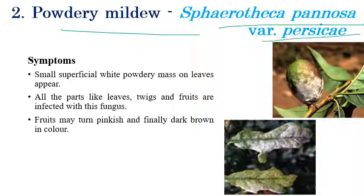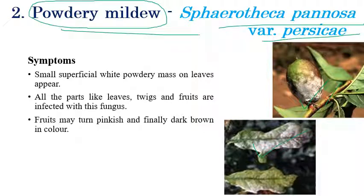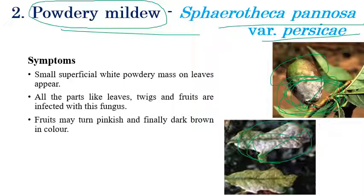The second disease is powdery mildew, caused by Sphaerotheca pannosa var. persica. The name itself indicates powdery growth, which can be seen on leaves, twigs, and fruits. The symptom is a white color superficial powdery growth on infected fruits and leaves. Infected fruits are also turned into a pinkish color or dark brown color, along with the development of white superficial powdery mass.